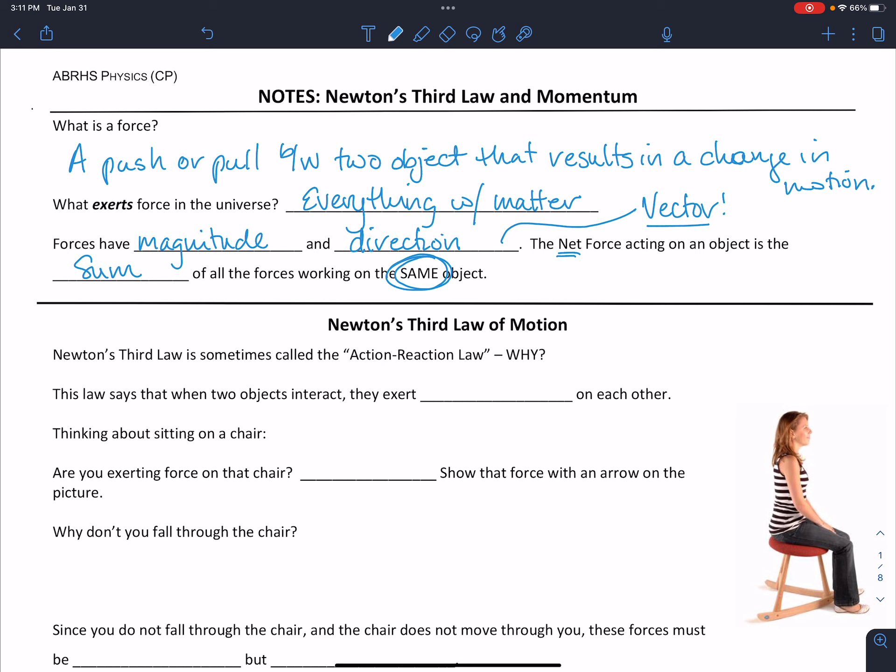We learned back in our last unit that Newton's second law tells us that net force is going to be equal to the mass of that object times its acceleration. Or we could think about that net force as the sum of all of the forces acting on it. So basically, F net equals force 1 plus force 2 plus force 3, 4, 5, 6, however you want to look at it.